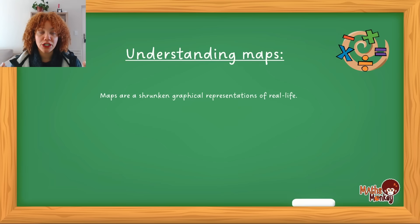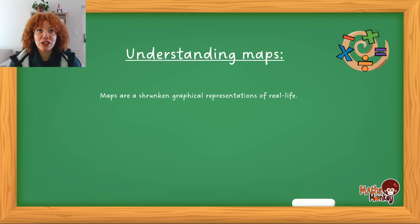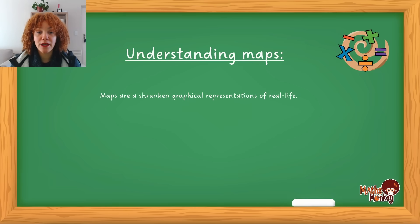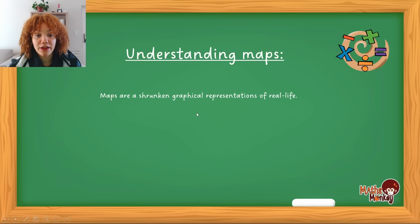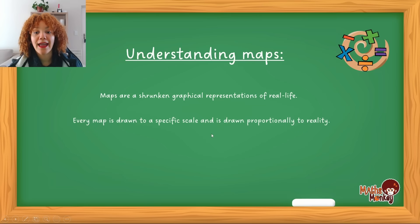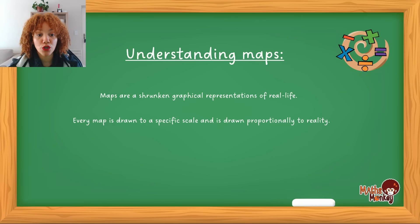The scale tells you the relationship between real life and the actual thing drawn on the map. Logically, if you were to map out a school ground you can't fit it on a page the size of the school ground, so it needs to be shrunk down. By how many times it gets shrunk down to fit on the page will refer to your scale. Every map is drawn to a specific scale and is drawn proportionally to reality.